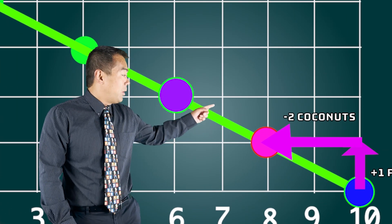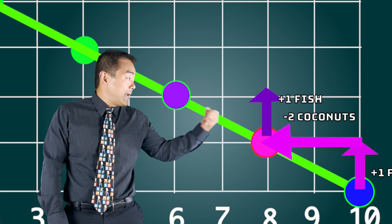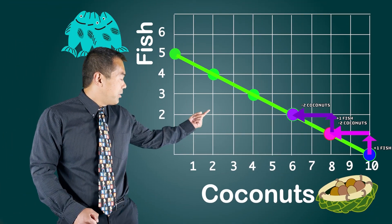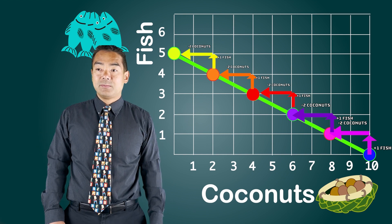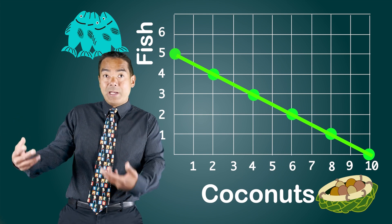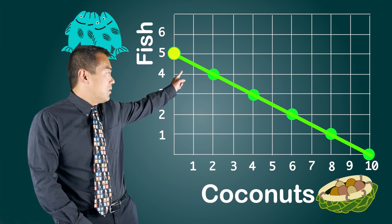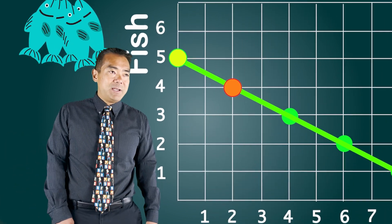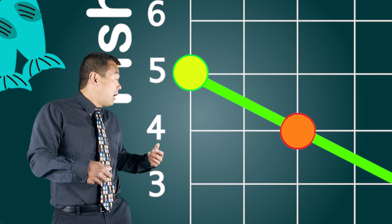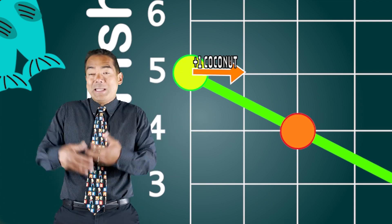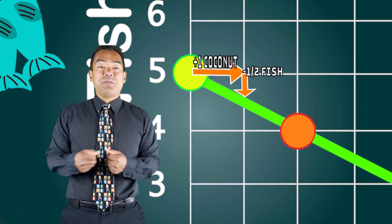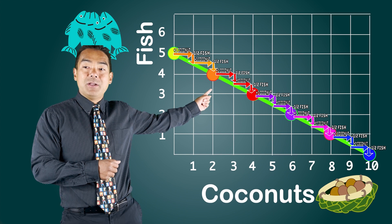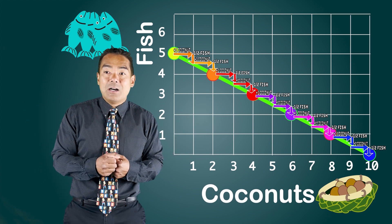The same is true if I move from this point to this point — I catch a second fish and lose two more coconuts. The opportunity cost of the second fish is two coconuts, and the same is true for the third, fourth, and fifth fish. We can also calculate the opportunity cost of coconuts in terms of fish. Starting with five fish and zero coconuts and moving along the curve, each additional coconut I produce means I'm giving up half of a fish. All the way down this production possibilities curve, the opportunity cost remains one coconut for half a fish.